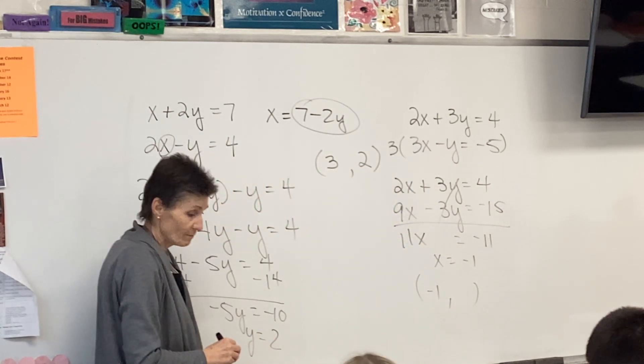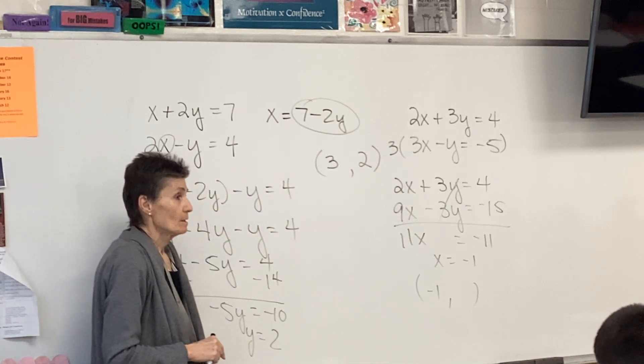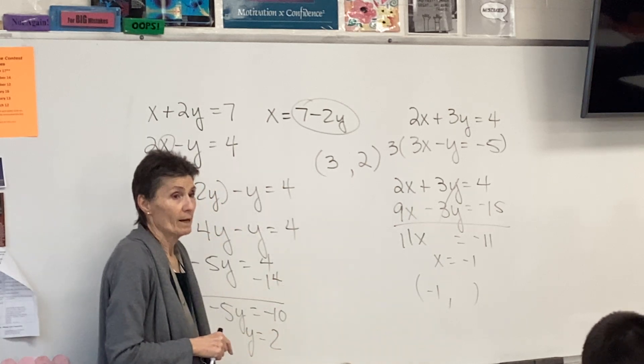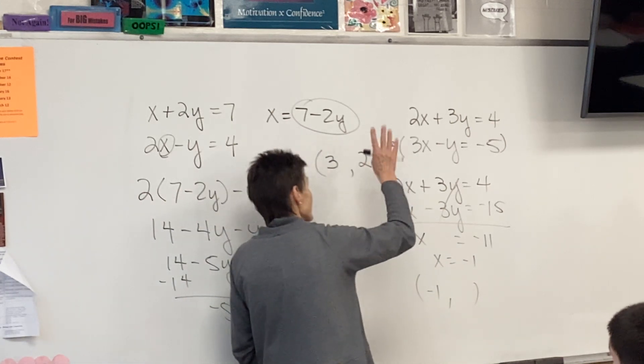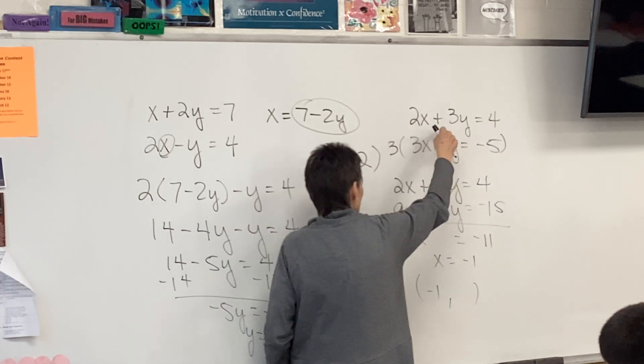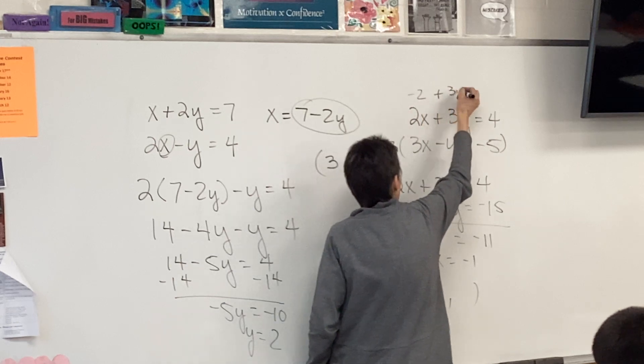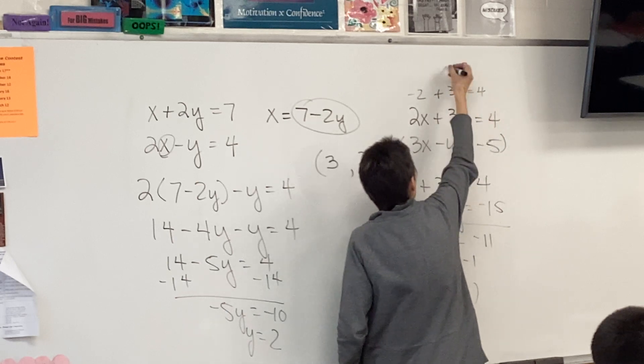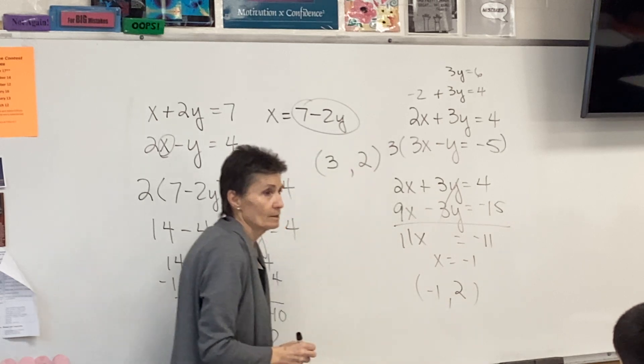The y's are gone. 11x equals negative 11, and x equals negative 1. Just like before, in fact every problem on this page, you're going to be finding an x and a y. So now I know my x is negative 1, so I'm going to go back somewhere and plug it in. If I put in negative 1, I have negative 2 plus 3y equals 4. Adding 2, I have 3y equals 6, and it looks like y equals 2.